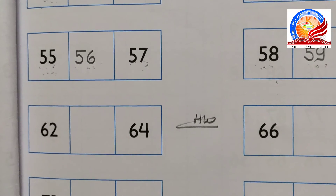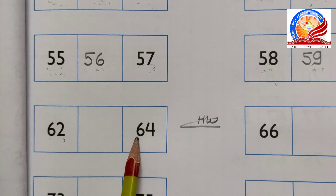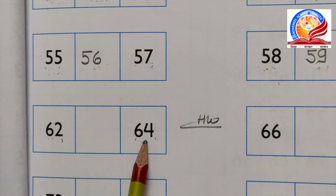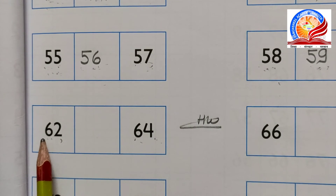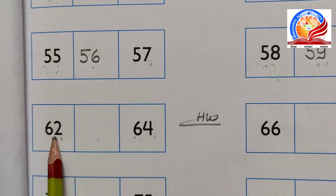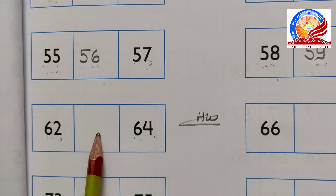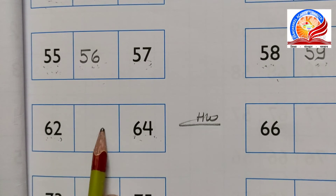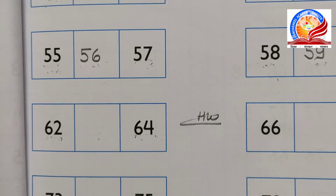Chaliye hum ek baar dekhte hain. Yahan diya gaya hai 62 aur 64. 62 aur 64 ke beech mein kaun sa number aayega? 61, 62, and 63. 62, 63, and 64. 63 is between 62 and 64. 63 aayega yahan par - 62 aur 64 ka between number hoga.